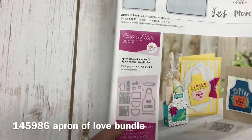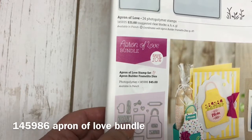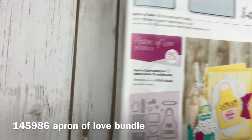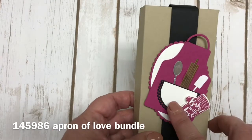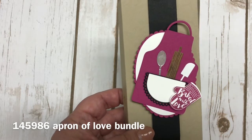These little framelits come in—if you can see the detail on these—to cut out all of those little kitchen utensils that can fit into this apron. You can see that here on my project, all these little pieces that coordinate. I just love it.